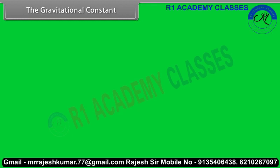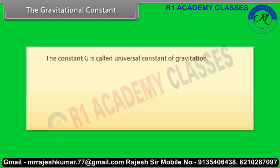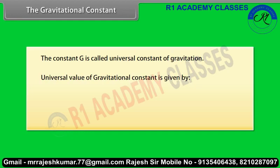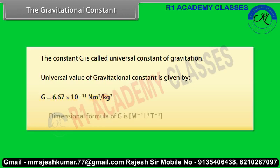The gravitational constant. The constant G is called the universal constant of gravitation. Its universal value is G = 6.67 × 10⁻¹¹ N·m²/kg². The dimensional formula of G is M⁻¹L³T⁻².